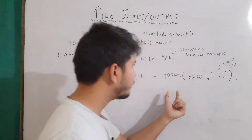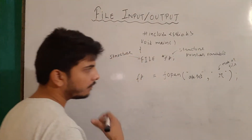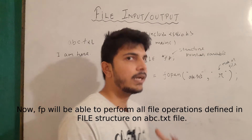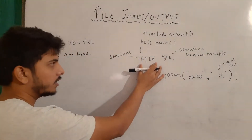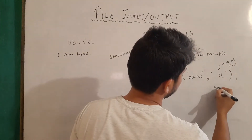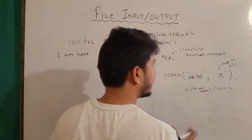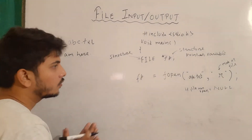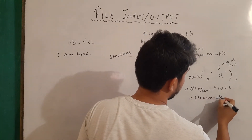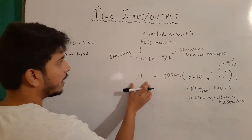Now what is happening here? fopen returns the address of the structure of type FILE. If fopen is able to open this file, it will return an address of the FILE structure, and that address is assigned to fp. Now fp is able to manipulate or do all sorts of operations defined in this structure. Another thing is that if fopen is unable to open this file, then it will return NULL. So if the file does not even exist, it will return NULL. If the file is present and opened, it will return the address of the FILE structure, which is assigned to the fp pointer variable.